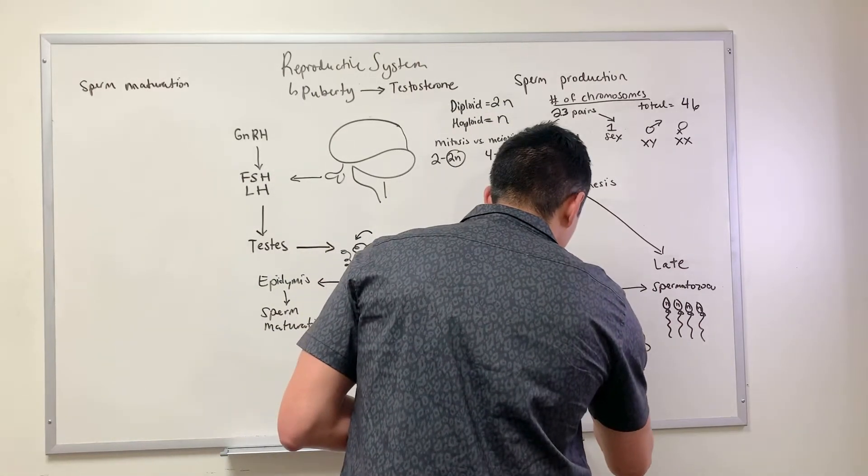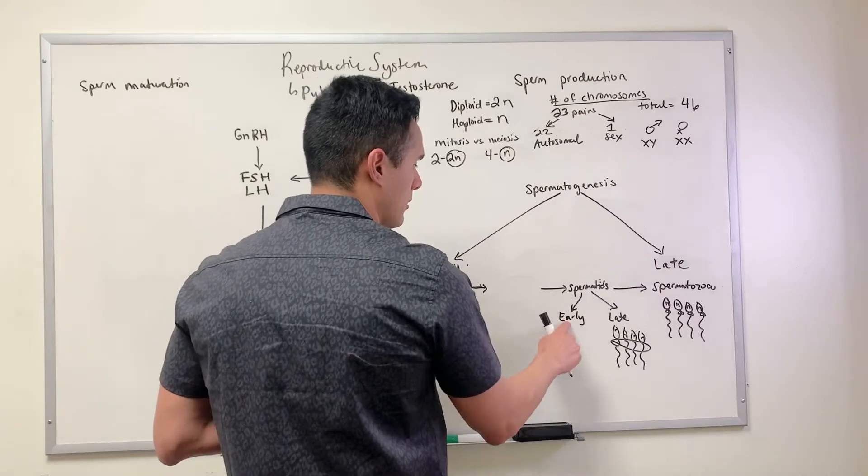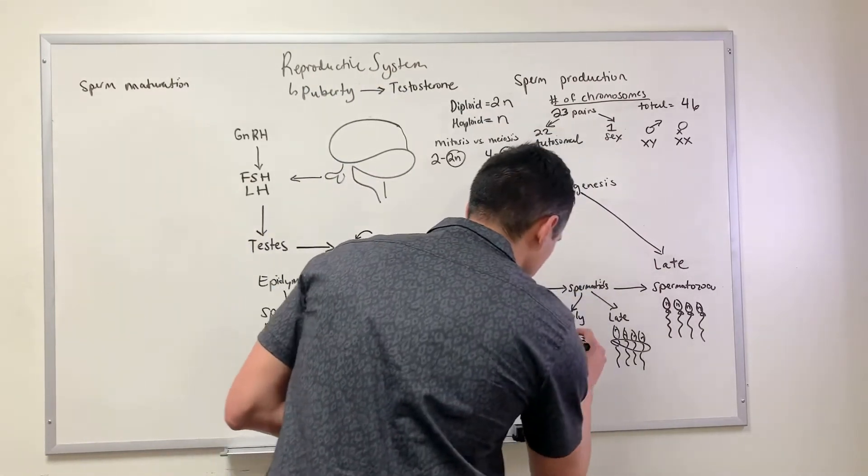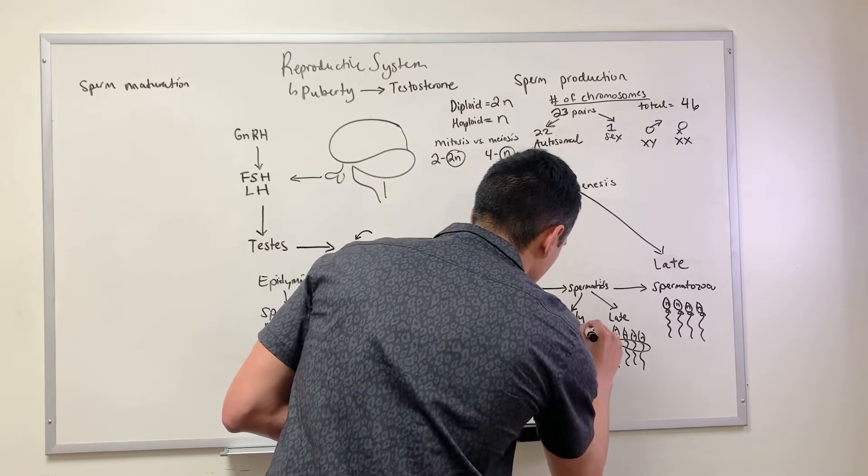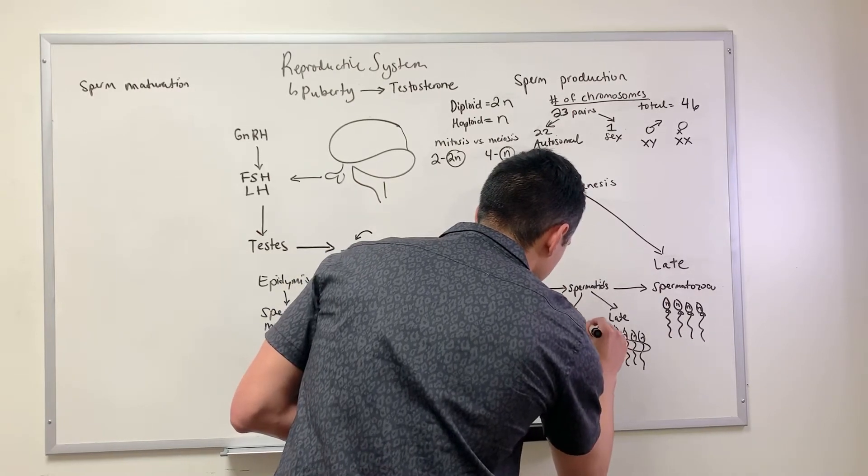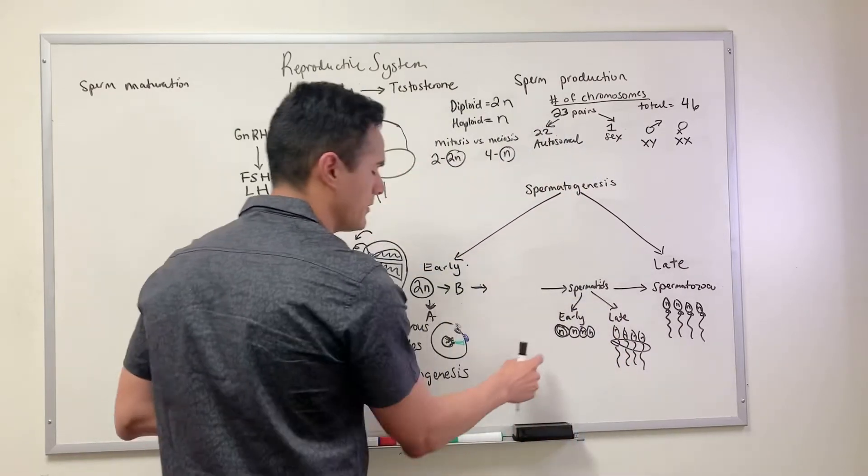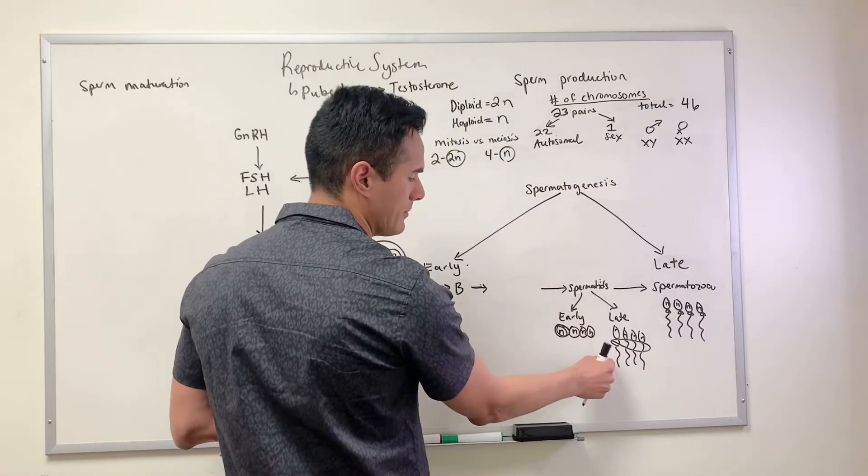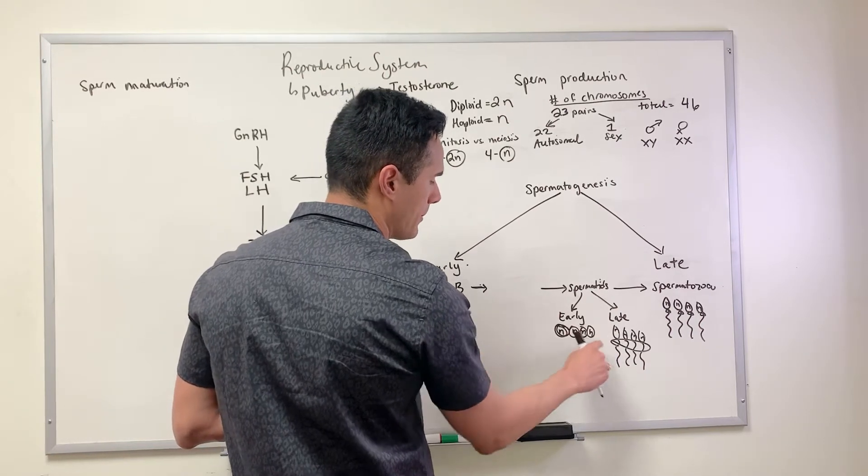Once they become spermatozoa, they're four single separate cells. What happens with our early spermatids? Early spermatids still have our four haploid cells that are connected together, but the difference is they don't have tails yet.